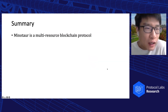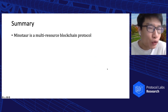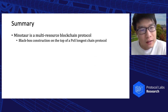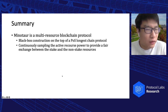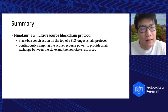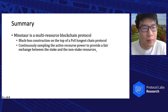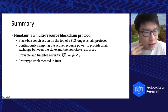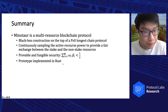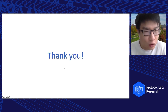As a summary, today I presented Minotaur as a multi-resource blockchain protocol. It is a black-box construction on top of a PoS long-chain protocol. Minotaur continuously samples the active resource power to provide a fair exchange between the stake and non-stake resources such as work or space. Minotaur also has provable and fungible security, and we have a prototype implemented in Rust. That concludes my presentation. Thank you for your time.